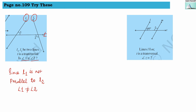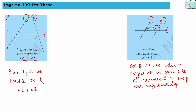Our next question: line L is parallel to M, and T is the transversal. They are asking what will be the measure of angle Z. As you can see, these two angles are interior angles and they are on the same side of the transversal, and because of that they are supplementary. So 60 degrees plus angle Z will give us 180 degrees in total. So angle Z equals 180 minus 60 degrees, giving us angle Z equals to 120 degrees.